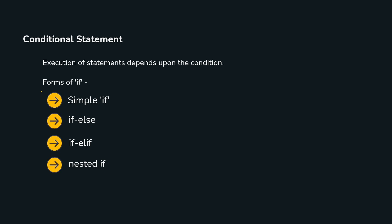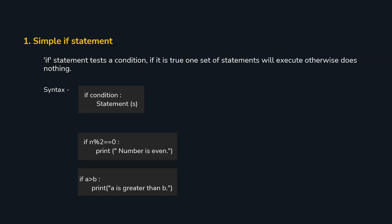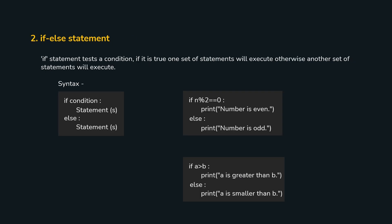We have reached an important topic: conditional statements. It checks a condition and based on the result, some statements execute and some do not. The first form is simple if — we write the if keyword followed by a condition; if the condition evaluates to true, those statements execute. For example, checking if a number is even: if the number is completely divisible by 2, its remainder is 0, meaning it is even. For the else part, use if-else: the true part executes when the condition is true, and the else block executes when it is false — for example, printing even or odd.